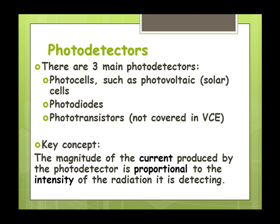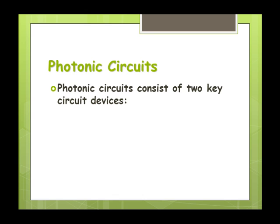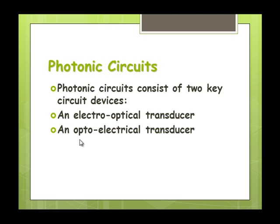So photonic circuits. We've got two key things that you must have. First, an electro-optical transducer. Recall what a transducer is: something that converts from one form of energy to another. So it's converting from electrical to optical, electrical signal to light. At the other end, we're after an electrical signal, so we need to reverse, an optoelectrical transducer, something that will get the light and convert it back to an electrical signal.